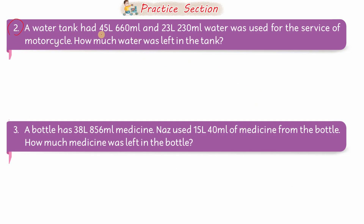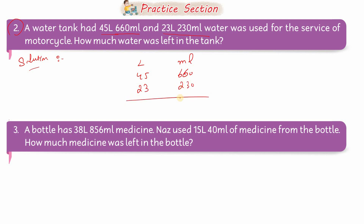Question number 2: A water tank had 45 liters 660 ml, and 23 liters 230 ml water was used for the service of a motorcycle. How much water was left in the tank? Total quantity of water 45 liters 660 ml تھی، اس میں سے 23 liters 230 ml motorcycle کے لیے use ہو گئی — بقایا کتنا پانی بچے گا؟